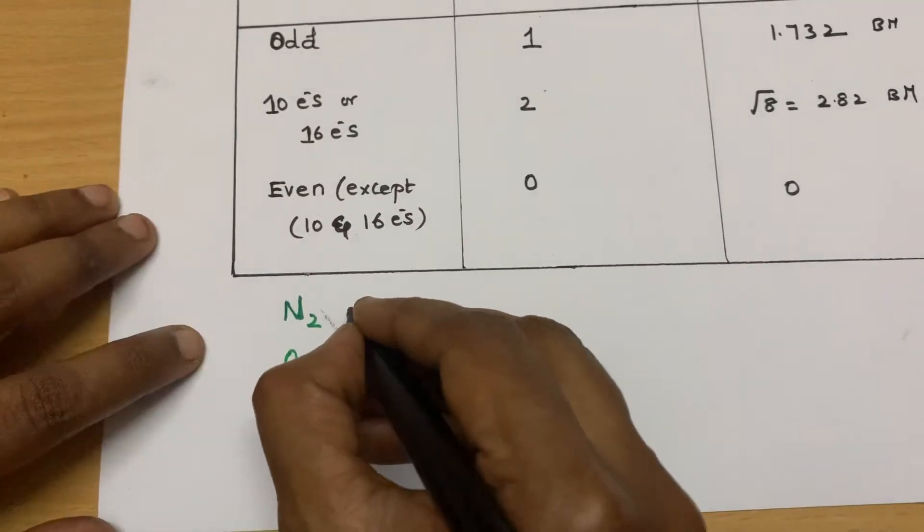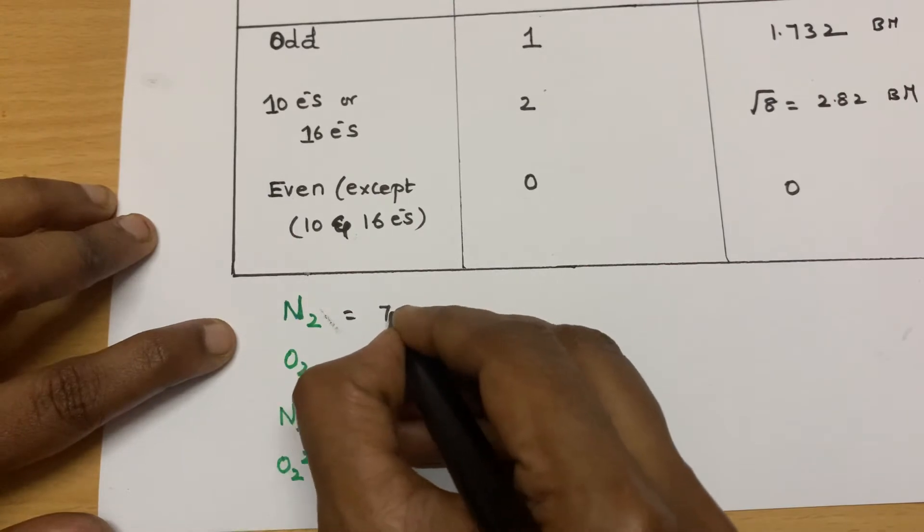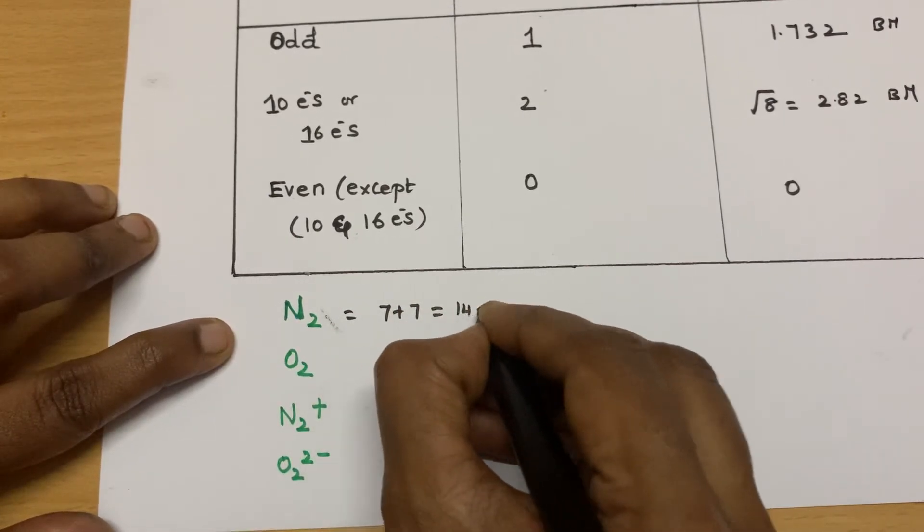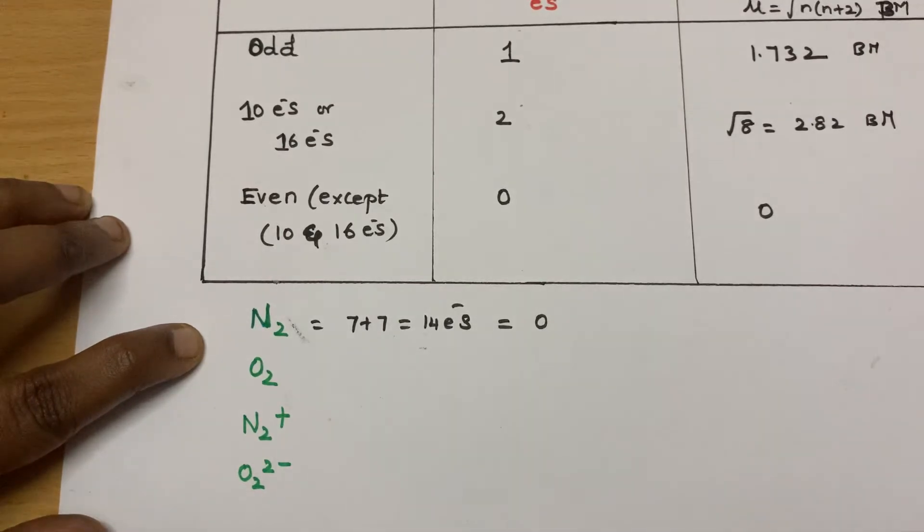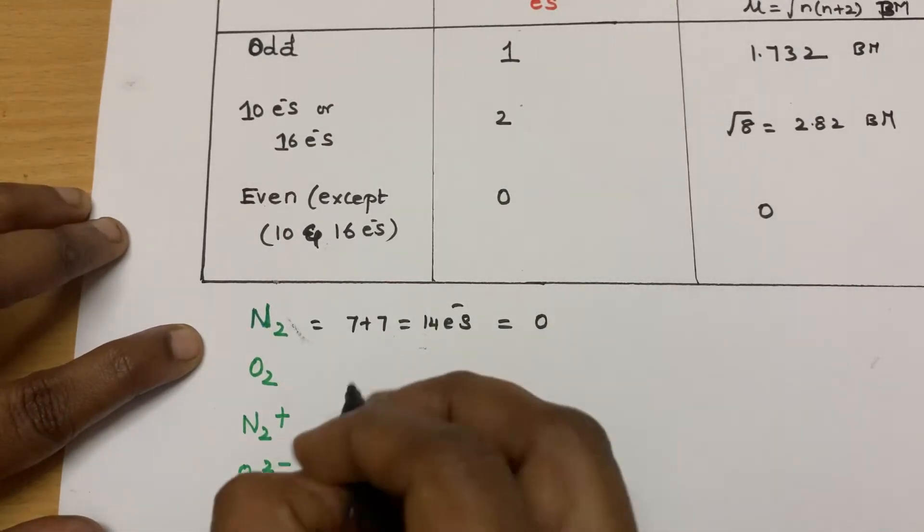So shall we try this? For nitrogen, 7 plus 7 is equal to 14 electrons. It is even. So its magnetic moment, 0 unpaired electrons and 0 magnetic moment.